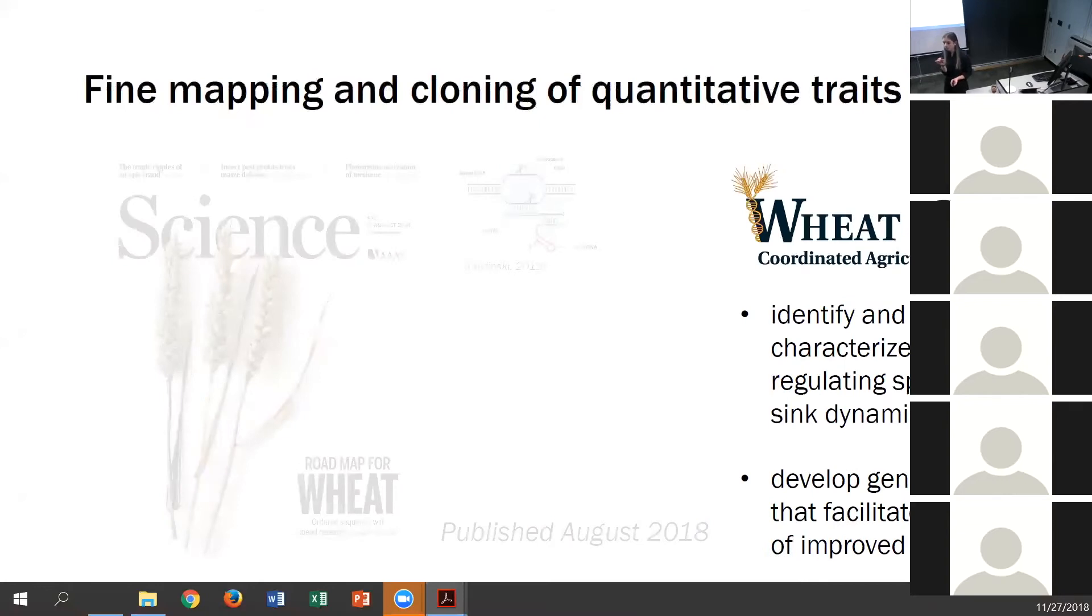The Wheat CAP, or Coordinated Agricultural Project, aims to do just this. It's a concerted effort across 15 land-grant universities to identify genes that control different yield components and then implement them into wheat breeding programs. Cornell is a part of this effort, and specifically in the Sorrells Lab, we're looking to identify genes that impact kernel weight and kernel shape.